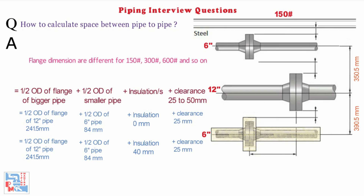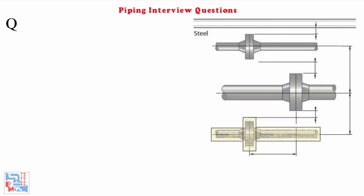Please remember, flange dimensions are different for 150 lb rating, 300 lb rating, 600 lb rating, and so on. If stress requires additional space for thermal movement, we need to provide this space as an addition. Next: How much clearance do we keep from steel to pipe? It should be 75 mm minimum from the outer edge of pipe or insulation.